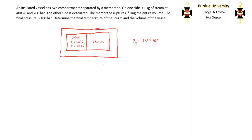We have our insulated vessel with one side being steam at 400 degrees Celsius and 200 bar, and the other side is a vacuum.